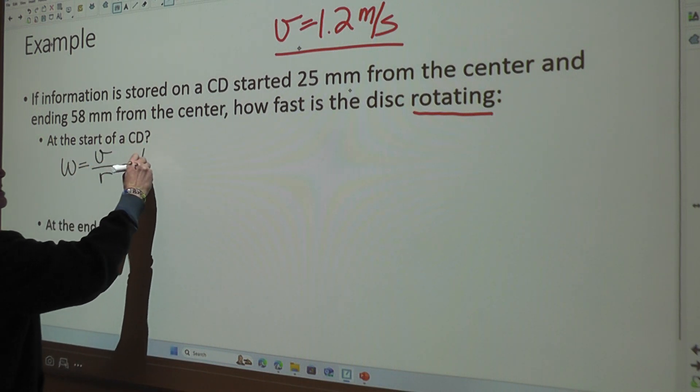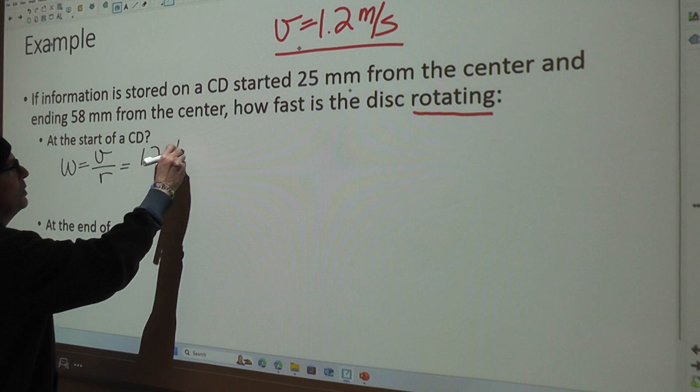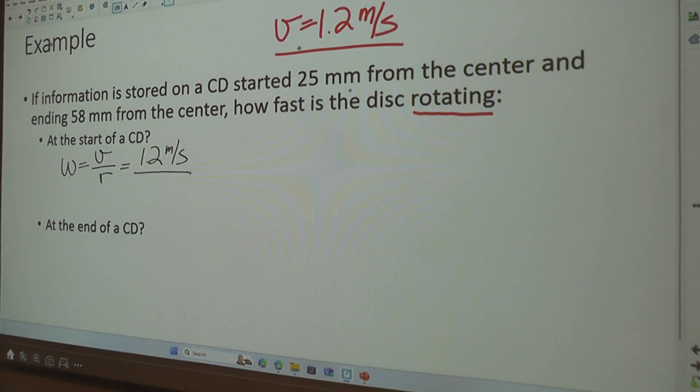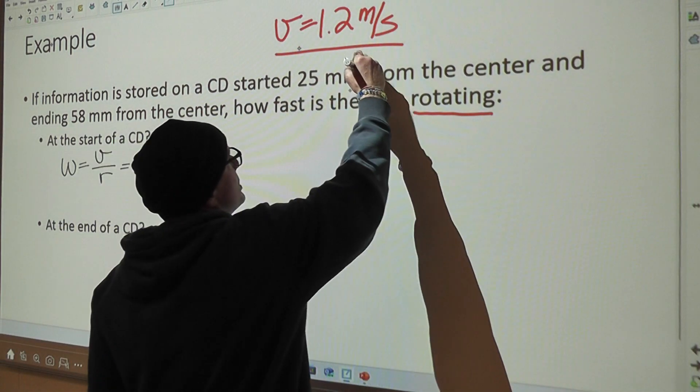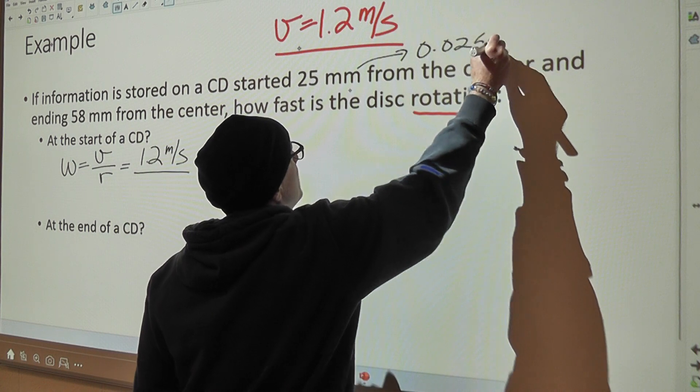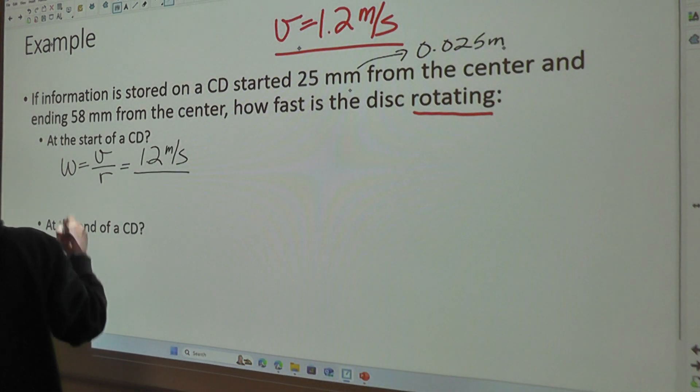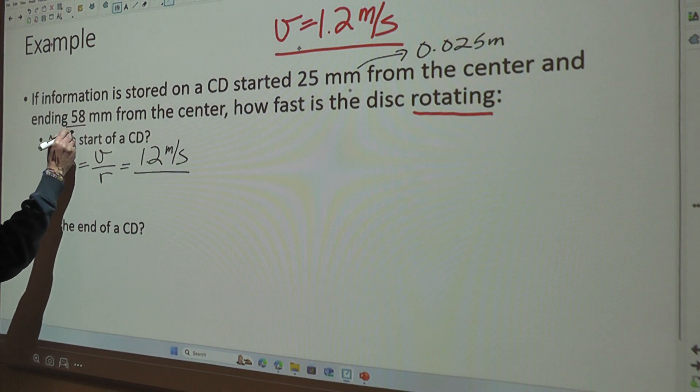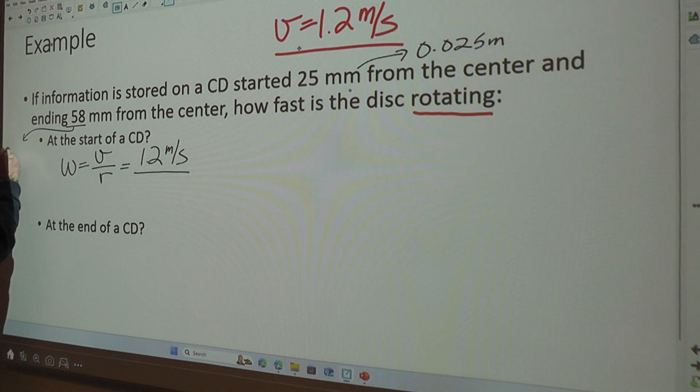Our linear velocity is always going to be 1.2 meters per second. We have two different distances. We have 25 millimeters, which is 0.025 meters, and we have 58 millimeters, which is 0.058 meters.